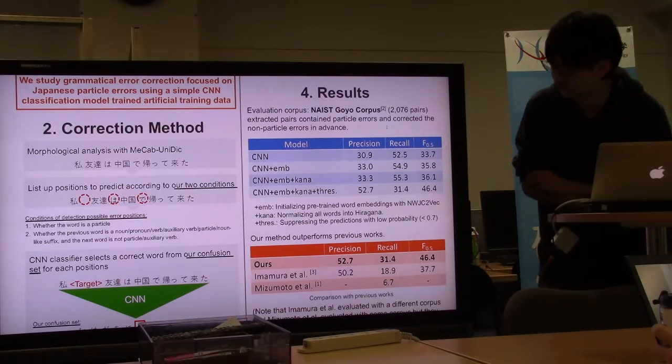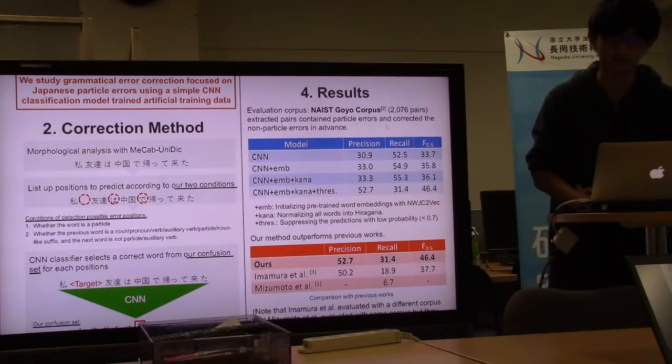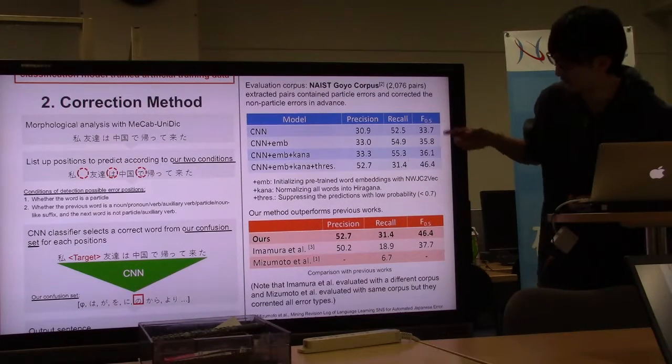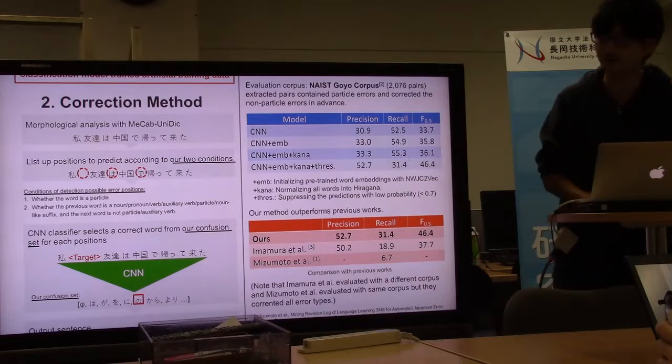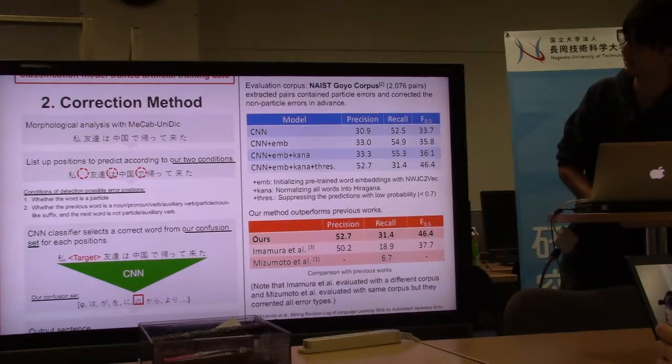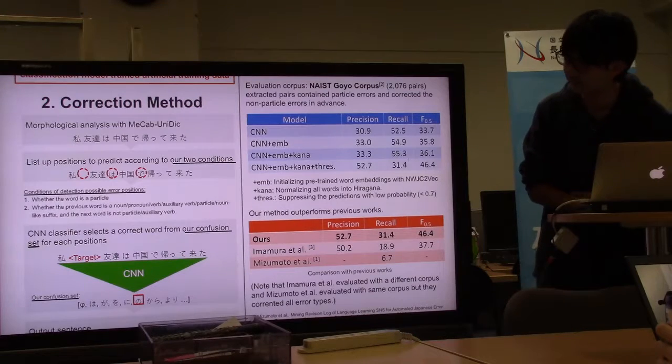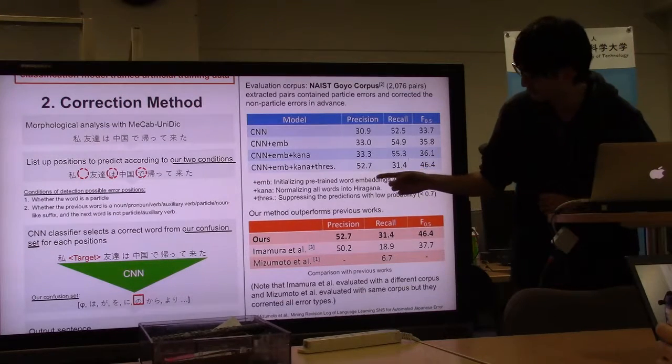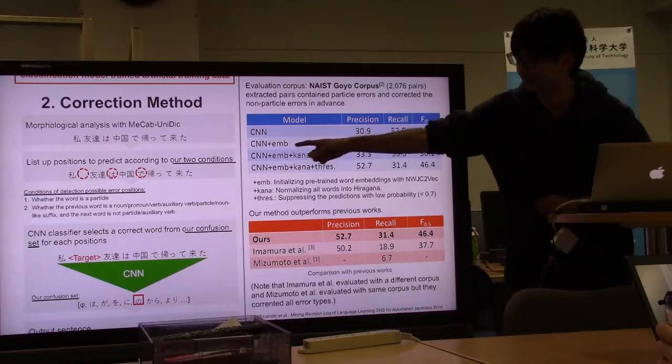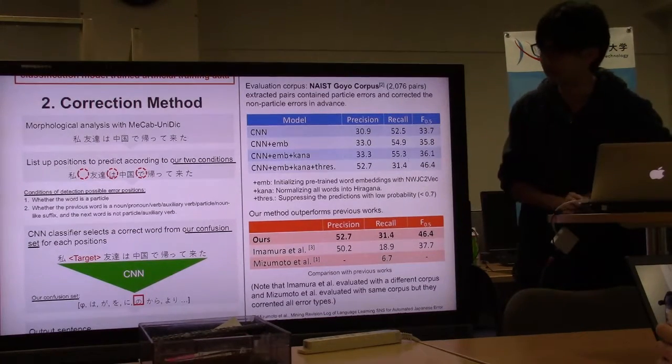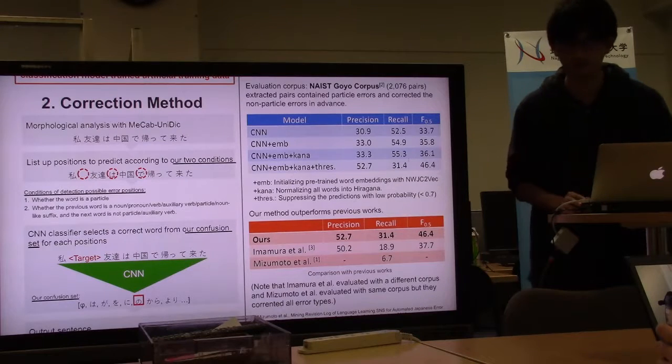This table shows our experimental result. The F 0.5 score increased by using pre-trained word embeddings and normalizing all characters.